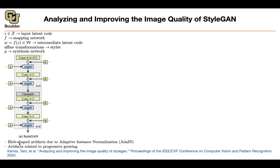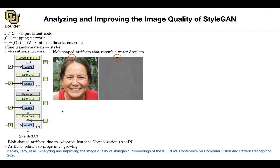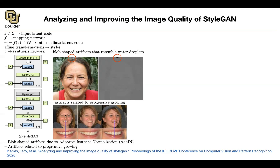Your manager looks at those images and notices some blob-shaped artifacts — in the shape of water droplets. You play around with adaptive instance normalization and figure out that something is wrong with it — this could be the root cause of these blob-shaped artifacts. There are also other artifacts whose root cause is progressive growing: when the face is front-facing, the teeth is also front-facing, but when the pose changes and the face is no longer front-facing, the teeth is still front-facing. These are definitely not nice artifacts.